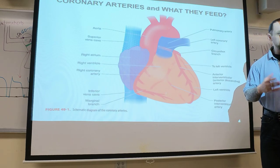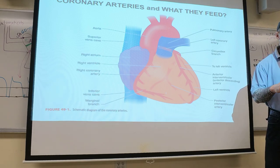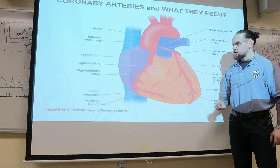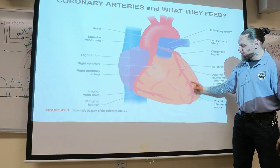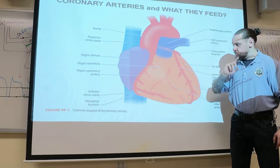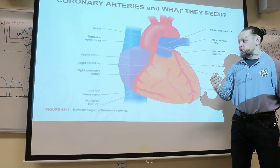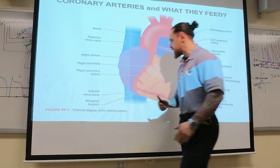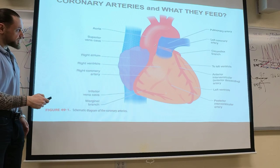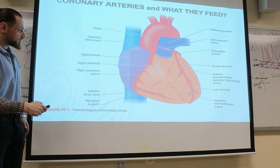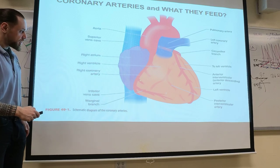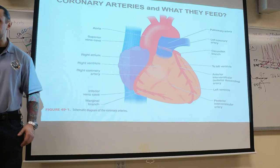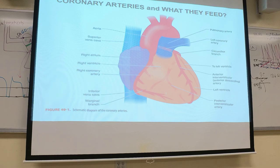For the purposes of this class, you only really need to know the three main coronary arteries — essentially two: the right coronary artery and the left coronary artery, which extends into the left anterior descending and the circumflex. What's very important is what they feed. The right coronary artery comes off the aorta and feeds the right atrium, right ventricle, and the posterior wall. Very importantly, it also feeds the SA node and the AV node.